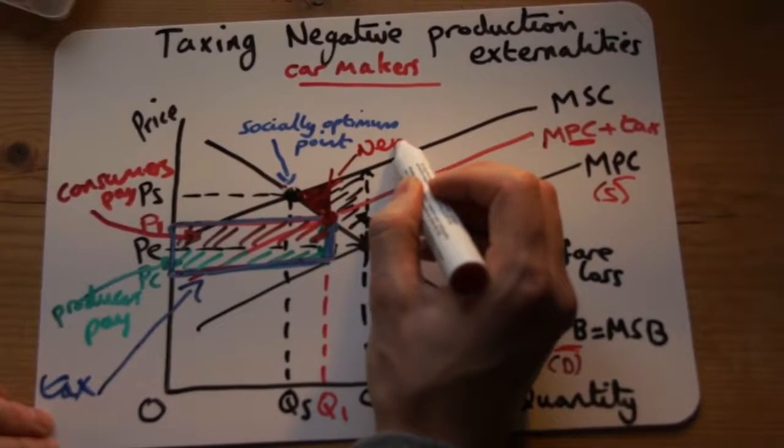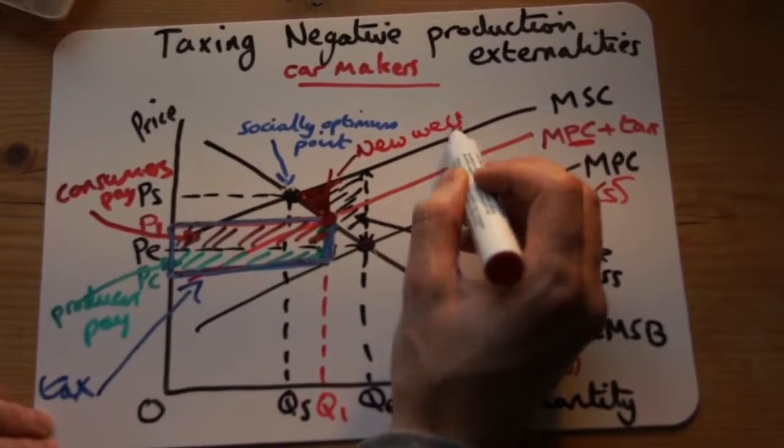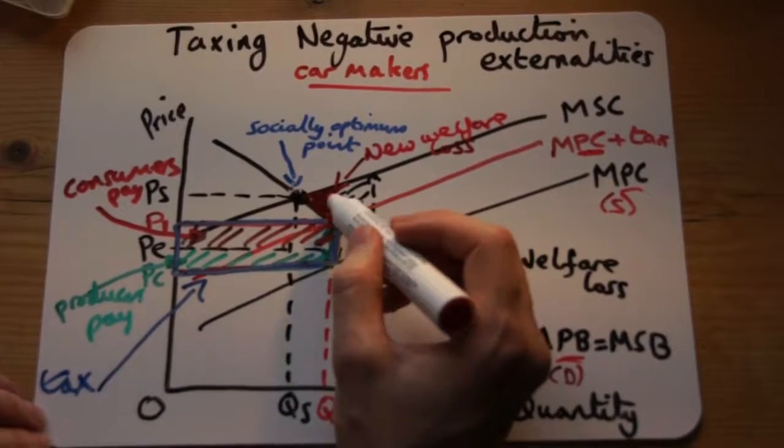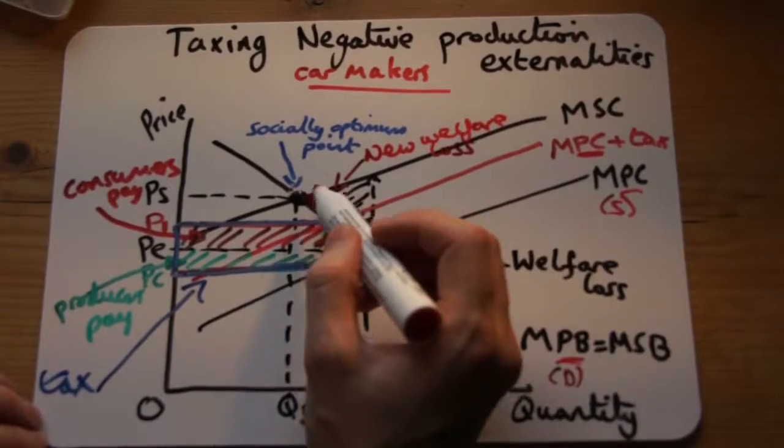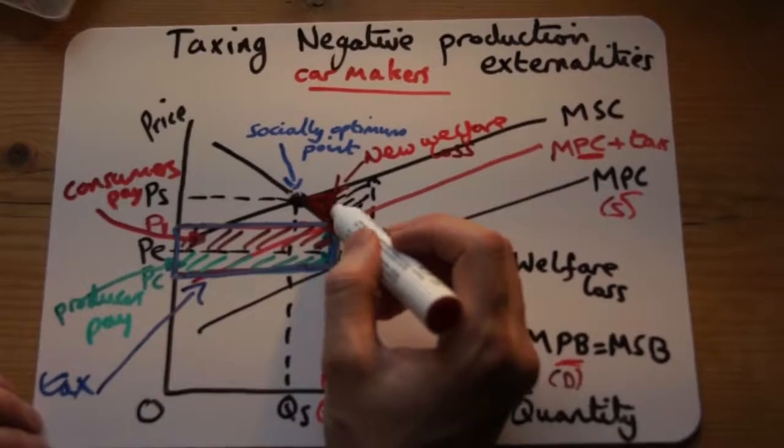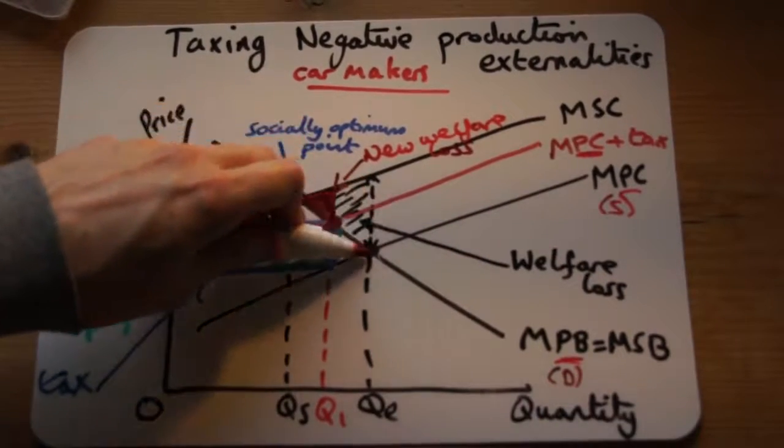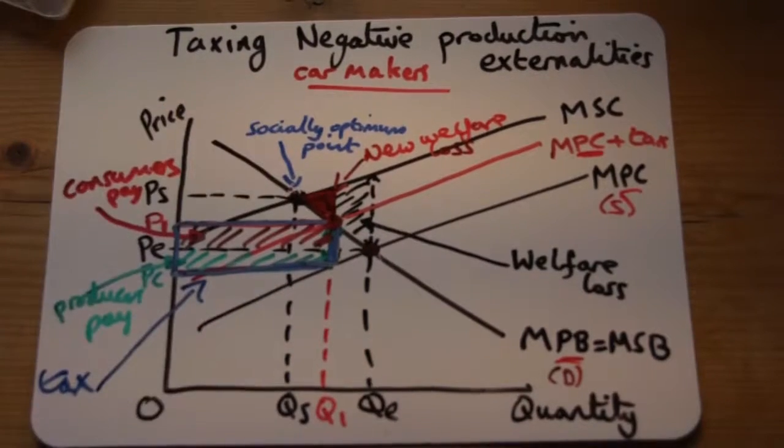So that's a new welfare loss because it's not fully solved. The problem isn't fully solved with this tax. We need to tax all the way up to there for it to be fully solved. So we still have a little bit of welfare loss which is less than this original huge one we had here.